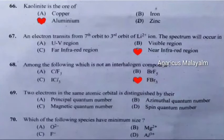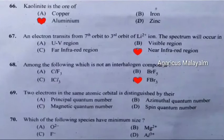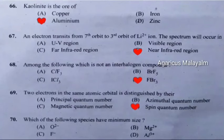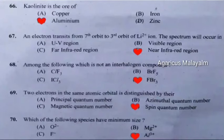Question 69: The two electrons in the same atomic orbital are distinguished by the. Correct answer is Option D: Spin quantum number. Question 70: Which of the following species have minimum size? Correct answer is Option D: Aluminium.